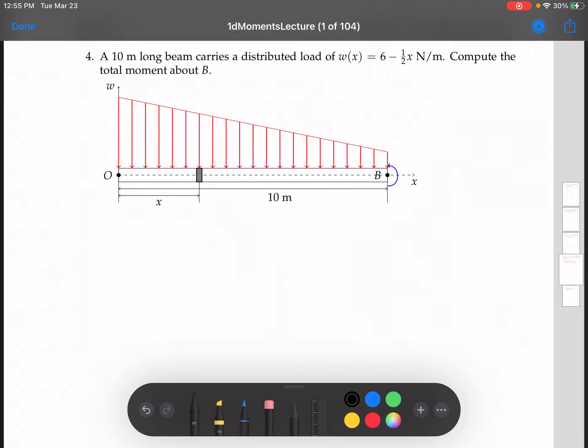Here we have the same 10 meter long beam, the same counterclockwise orientation as the previous video, except that now our distributed load is variable, so it changes as X ranges from 0 to 10.